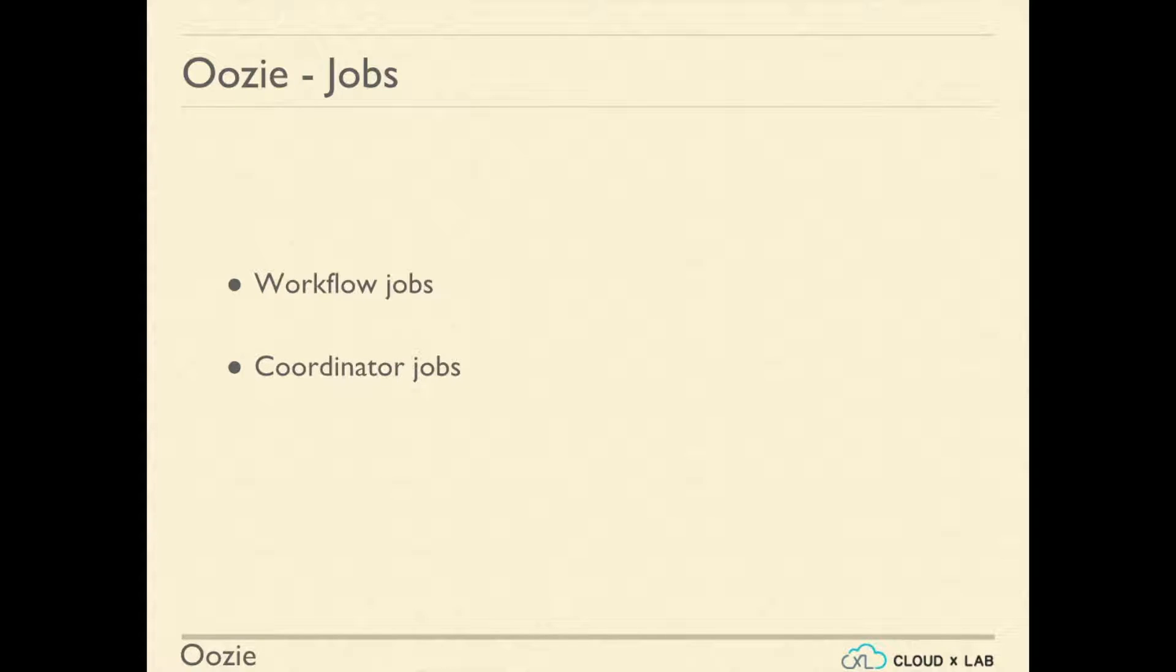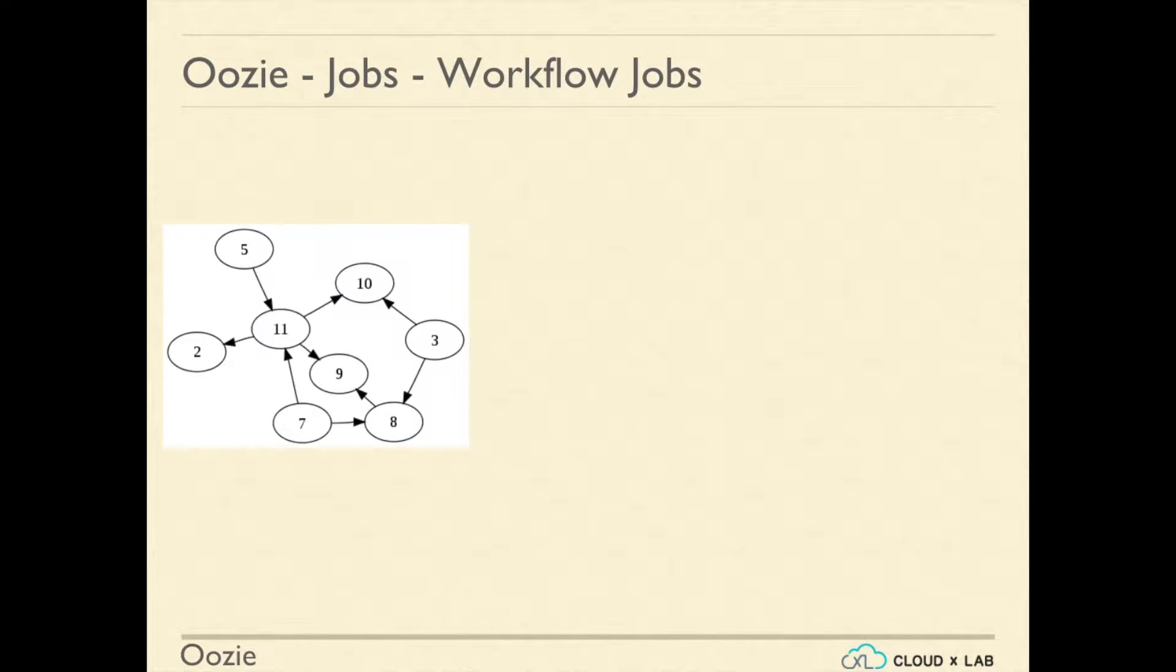Oozie workflow jobs are Directed Acyclic Graphs. A DAG specifies a sequence of actions to execute. DAG is a finite directed graph with no cycles. As shown in the image, task 10 can only be executed after task 11 and 3 are executed.